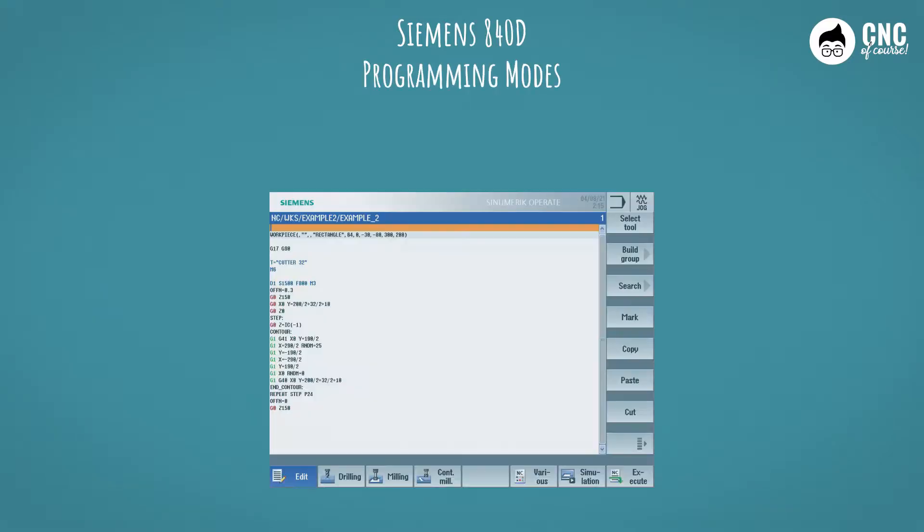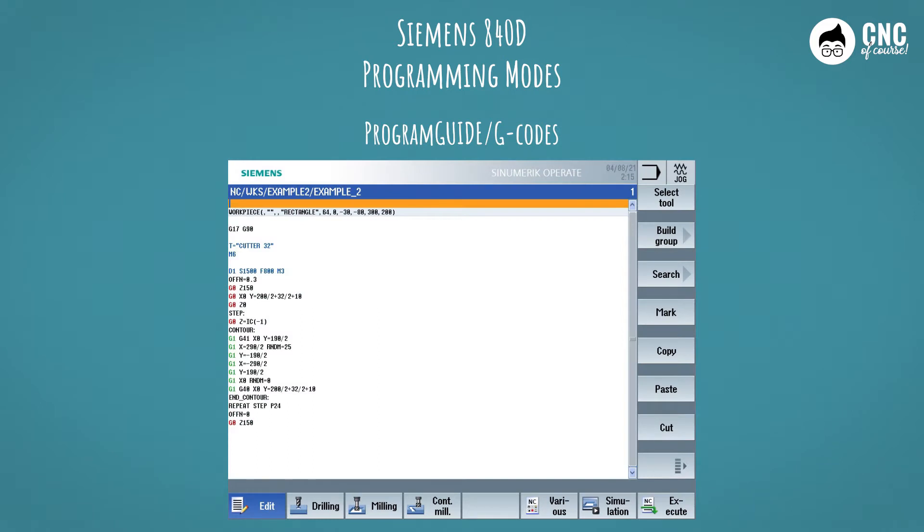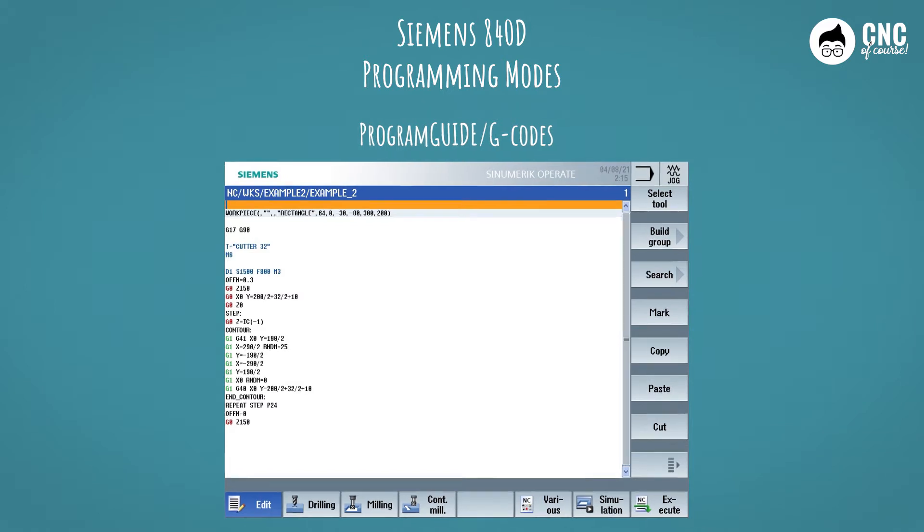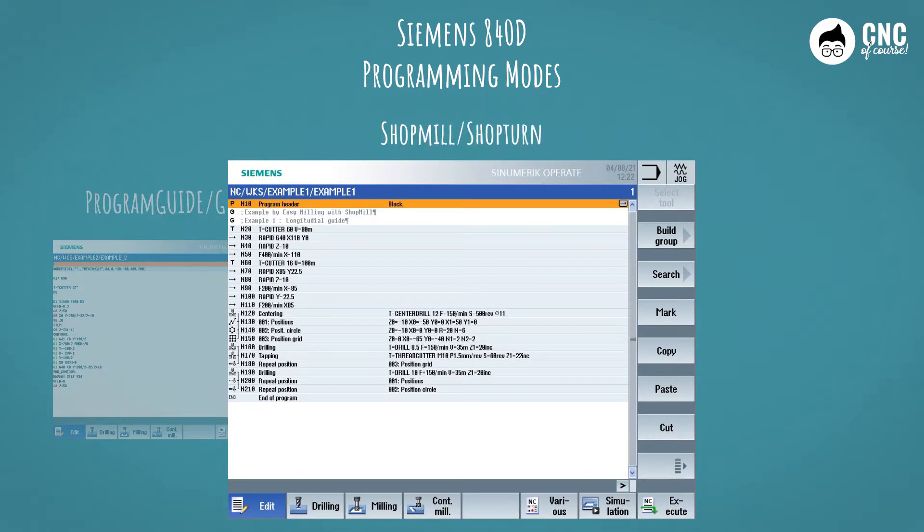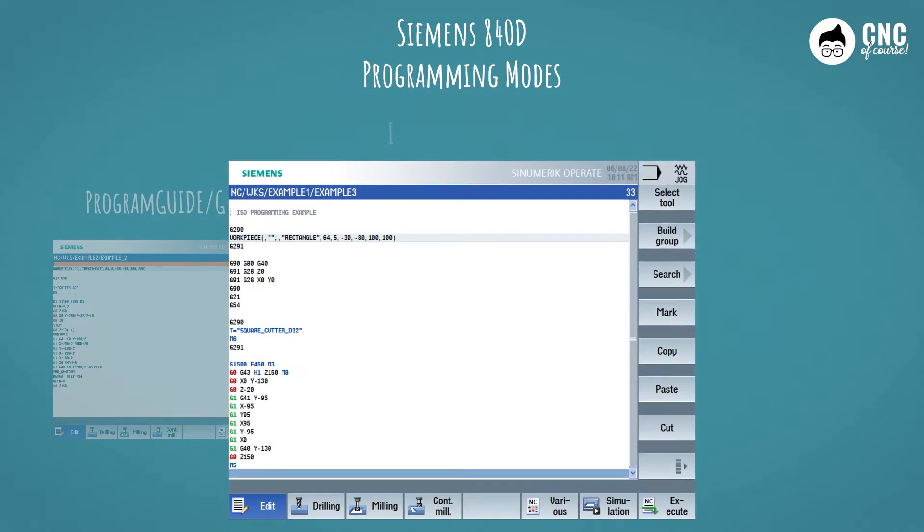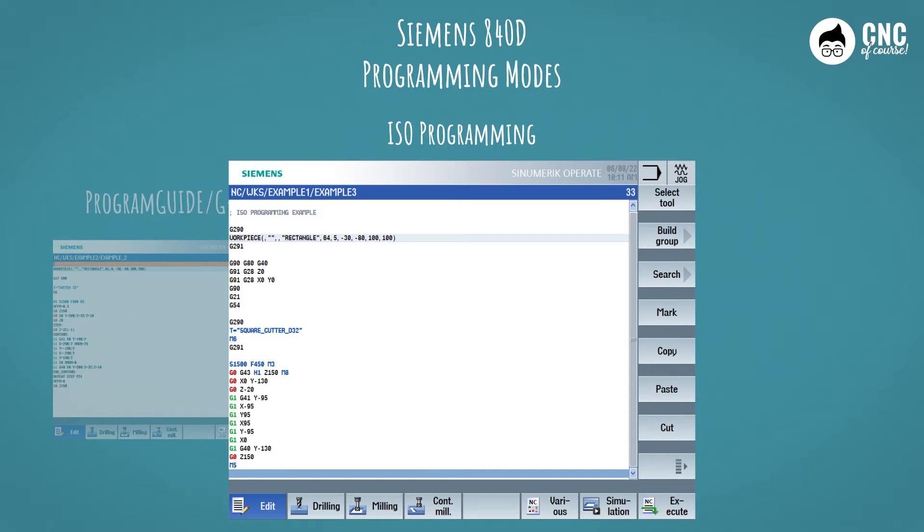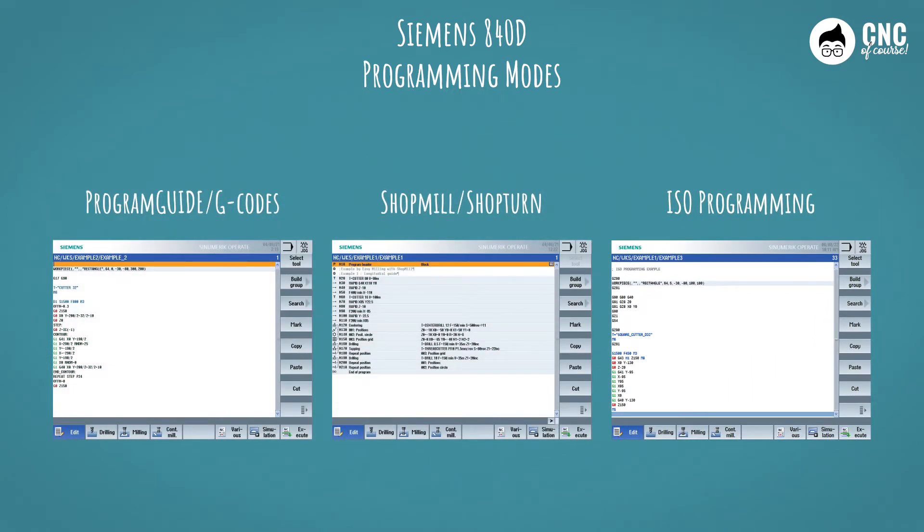So to summarize, there are three Siemens 840D programming modes. The first is the programming in G-code program guide, a programming that is partly ISO and partly extended by a whole series of functions developed by Siemens. Then we saw in the previous lesson, shop mill, obviously for milling, and shop turn, its counterpart for turning. It is a very conversational and operationally oriented programming language. Finally, one last possibility we have seen in this lesson, namely pure ISO programming, which is only accessible with the configuration of the specific machine data. Here the possibilities will be limited to ISO instructions to which Siemens functions can be integrated if necessary, using the G290 and G291 functions.